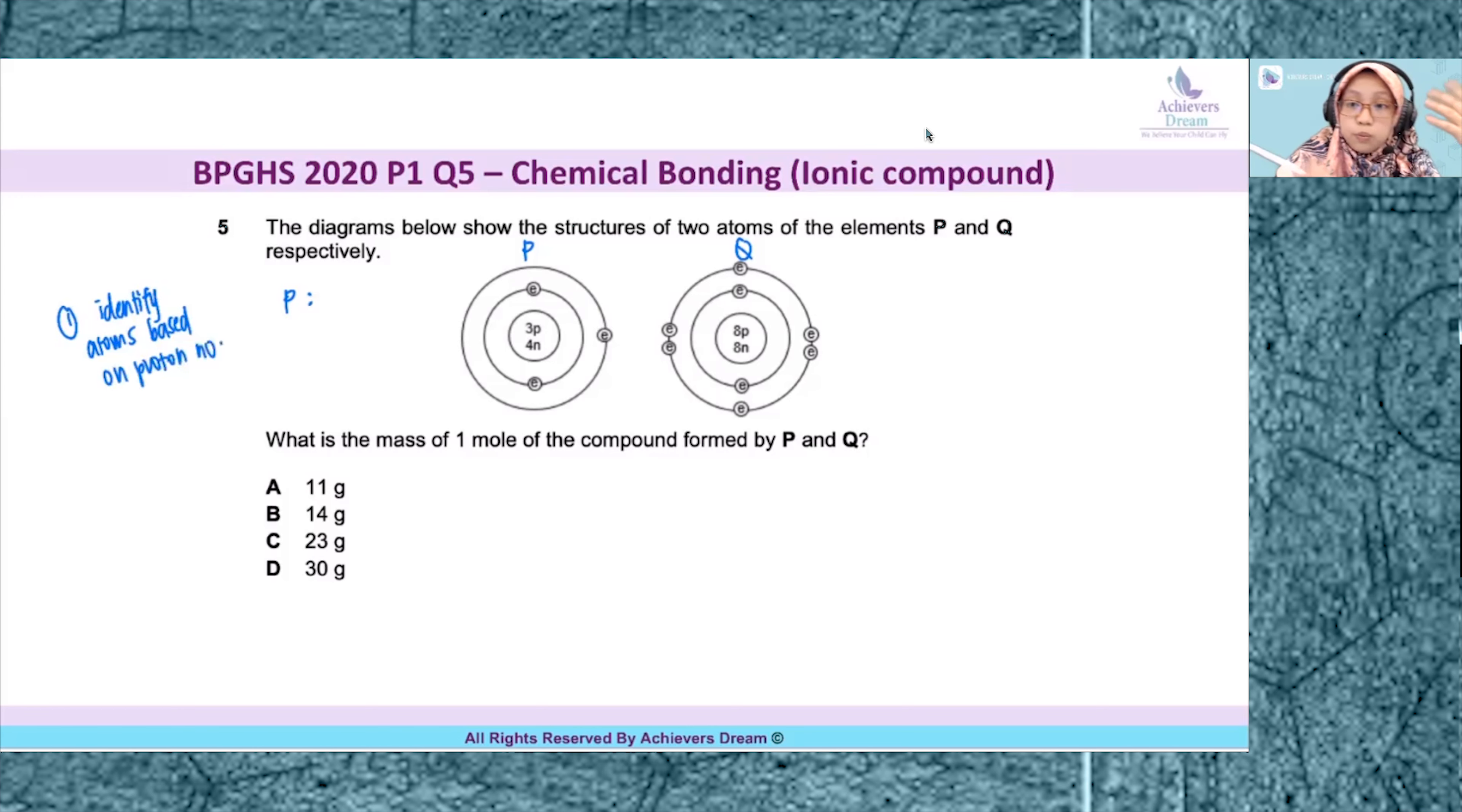Why? Because the number of protons of an element does not change. So P, you realize that it has three protons, this has to be your lithium atom. Refer to your periodic table and look for the element with proton or atomic number three, that has to be lithium.